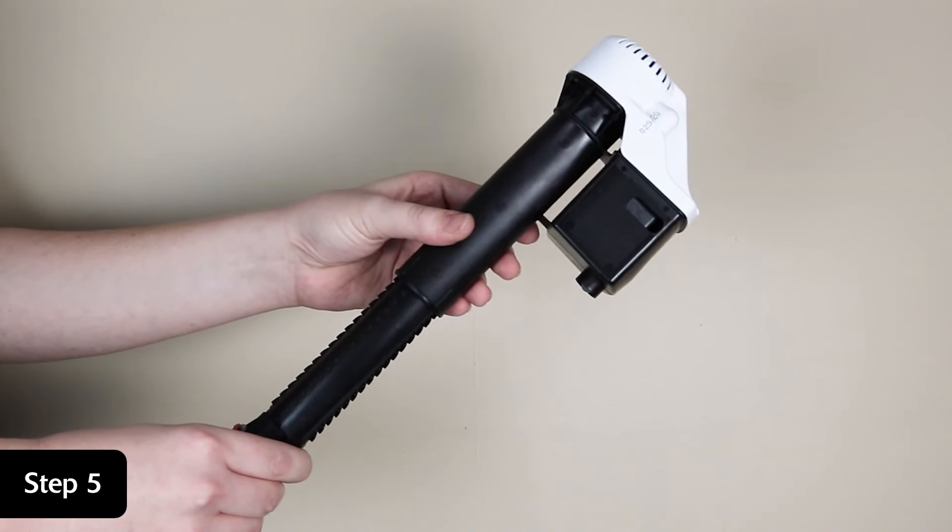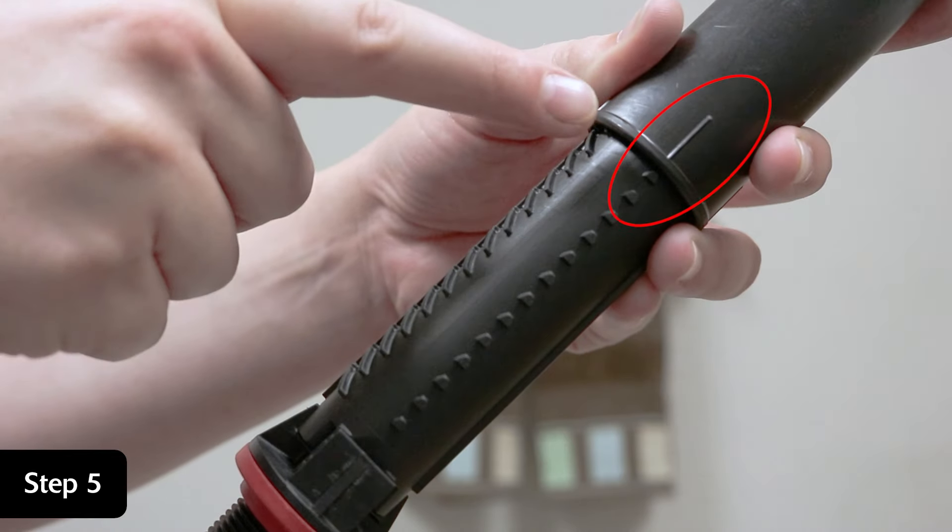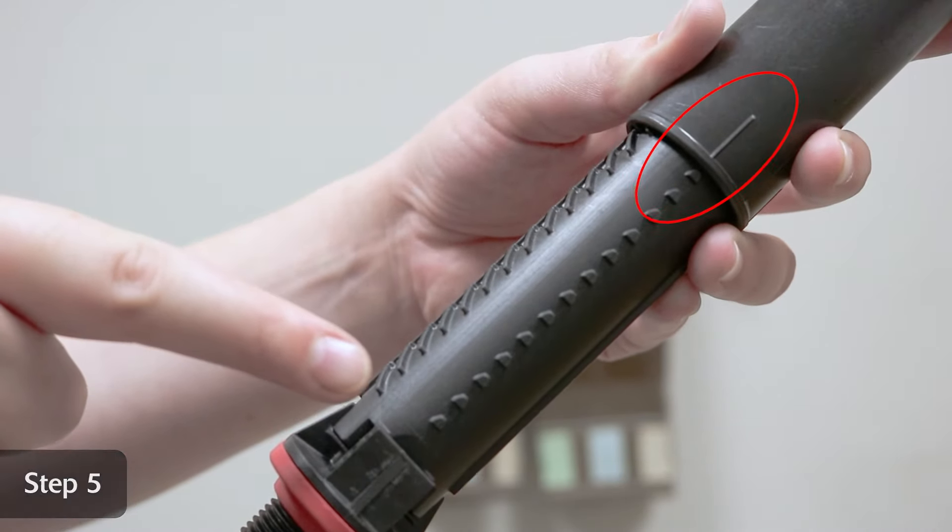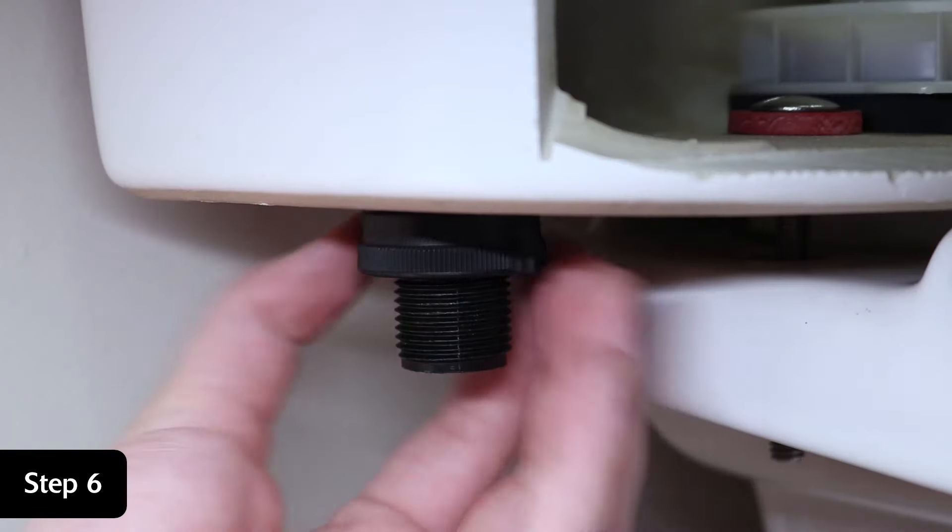Lock the fill valve in place by twisting the upper half clockwise. Make sure the rib on the top of the valve lines up with the pegs on the bottom half. Place the locked valve in the tank. Screw on the mounting nut.